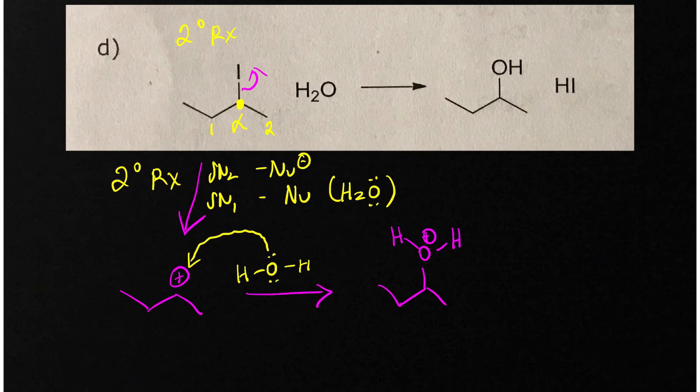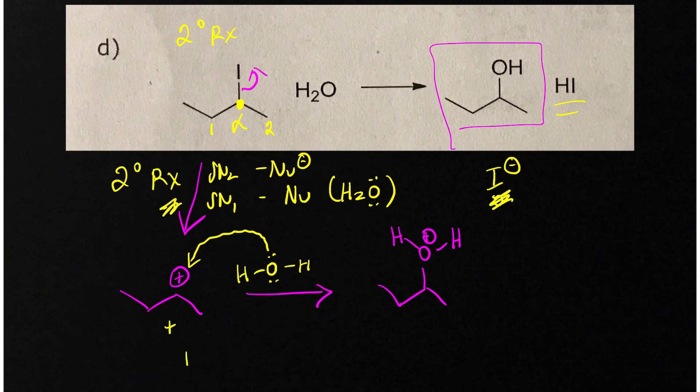That's not quite the product. If you look at the product we have a neutral alcohol so we're going to have to use something in solution to deprotonate this. I'm going to use, since we want to form the molecule HI, I'm just going to use iodide. Where does the iodide come from? It comes from the first step. So iodide is going to come in, act as a base to deprotonate this guy here and give us the products.